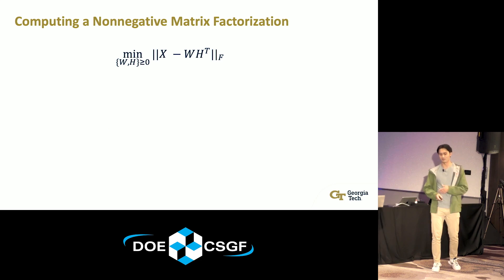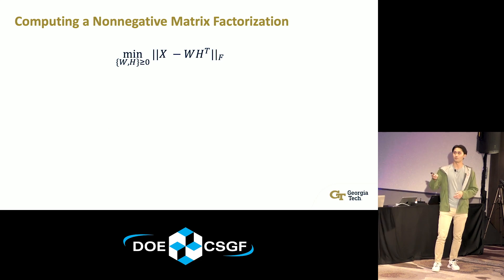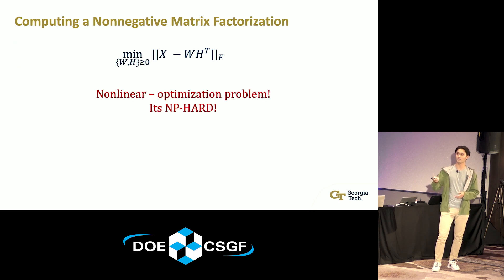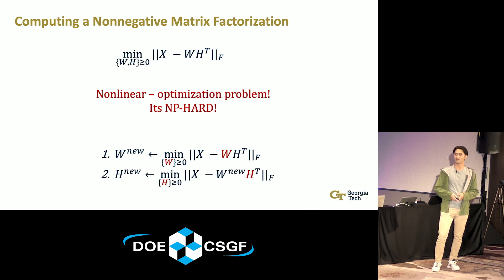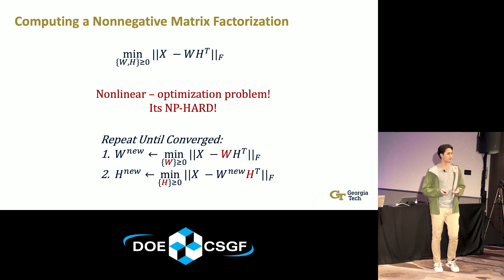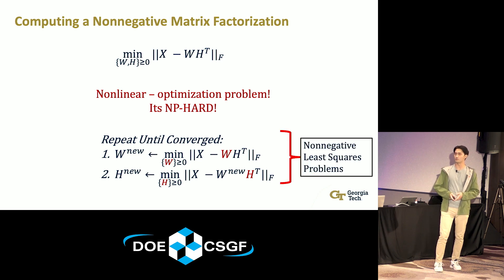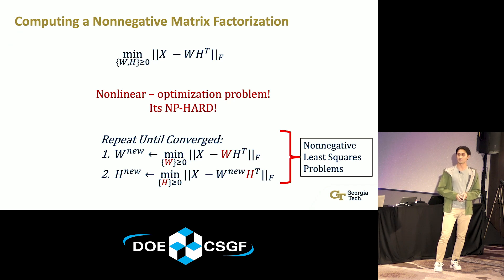Now I'll talk about how we actually compute NMF. The objective function is nonlinear and NP-hard, so we need an approximation. What we do is fix a subset of variables and solve for the free subset: we fix H and solve for W, then take that new W and solve for H, repeating until convergence. These two subproblems are called non-negative least squares problems. They're convex, so we can solve them efficiently using a convex optimization routine.